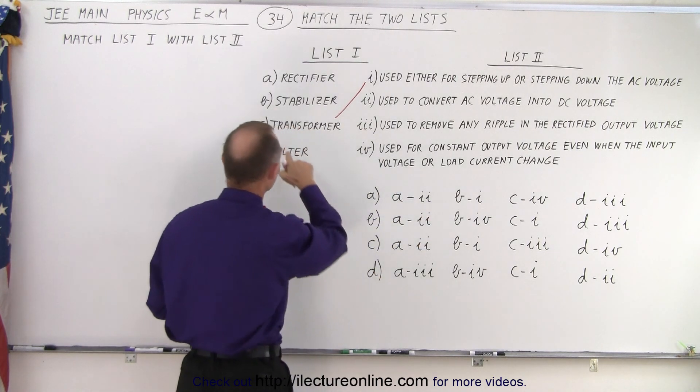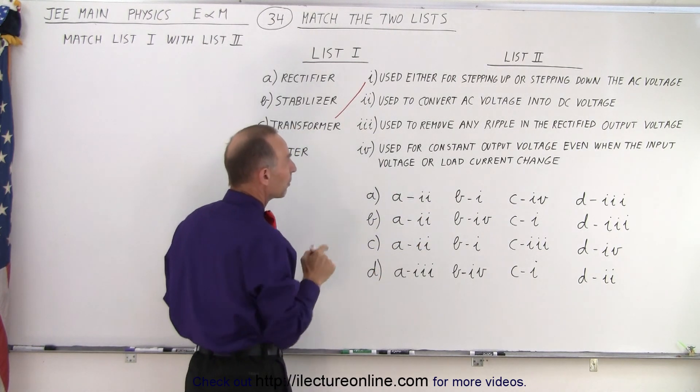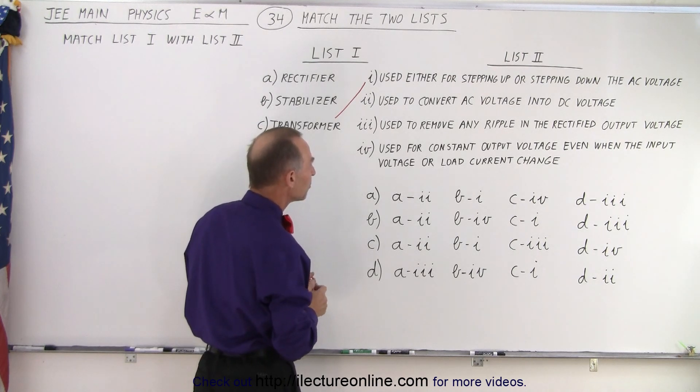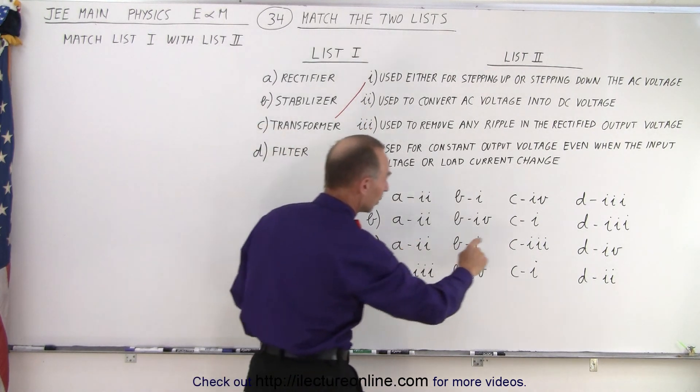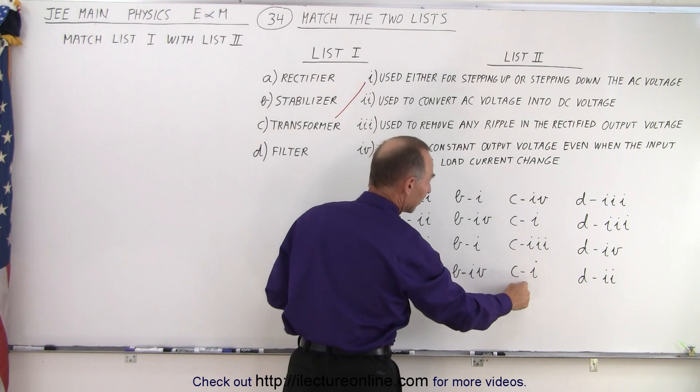So transformer would be matched with C. Now let's see what we have here. For C, we're looking for all the possible answers that meet that criteria. So here we have Ci and Ci.